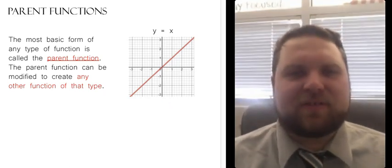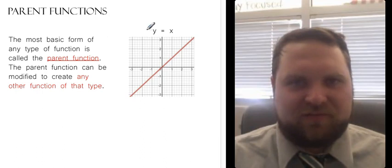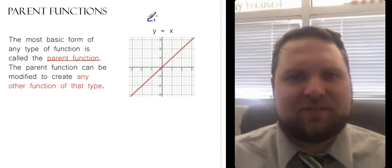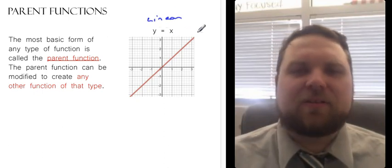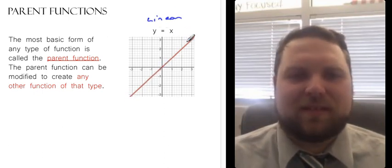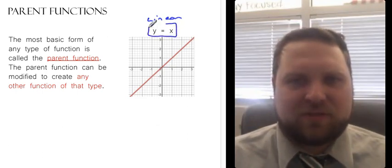Here we see the parent function for our group of functions that's called linear functions. Remember, linear functions are first degree polynomials, and when you graph them, you get a straight line. So by taking this parent function, y equals x, which is about the simplest line I can have.